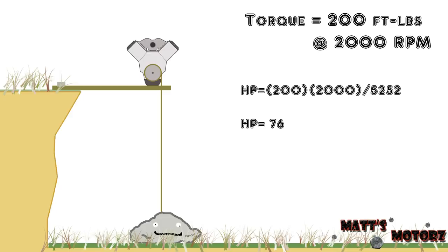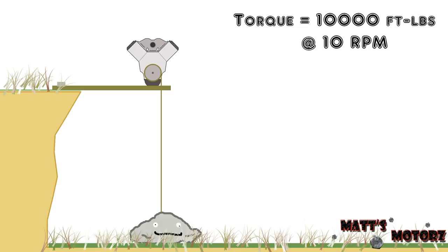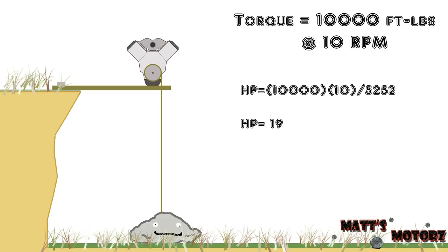This example shows you the usefulness of horsepower: horsepower defines how fast an engine can produce work. Now for a more extreme example — at least for a gasoline engine, though not ridiculous for a steam engine — let's say we have an engine that produces 10,000 foot-pounds of torque, but only at 10 RPM. Plugging in: torque equals 10,000, RPM equals 10, divided by 5252, we get that the horsepower is 19. So even though this engine produces an insane amount of torque, it cannot deliver it very fast — that's why the horsepower is so low. Horsepower defines how fast an engine can deliver power or do work.